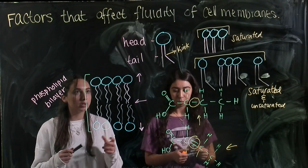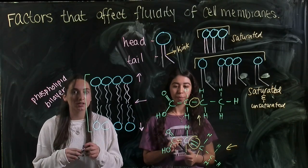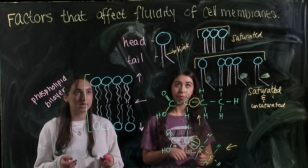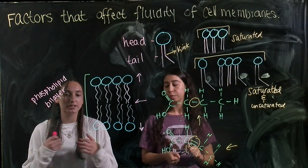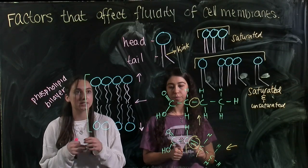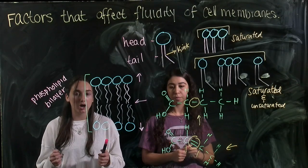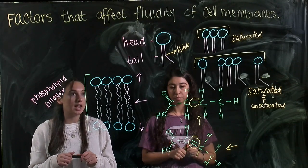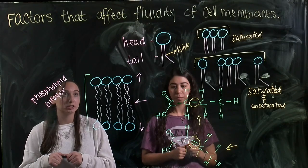The more London dispersion forces that are in the tail means that they want to stick together more. This makes the entire bilayer overall less fluid than it would be if there were less London dispersion forces.